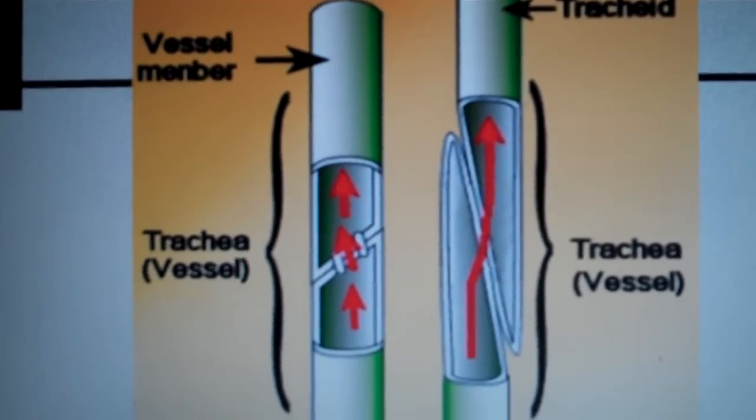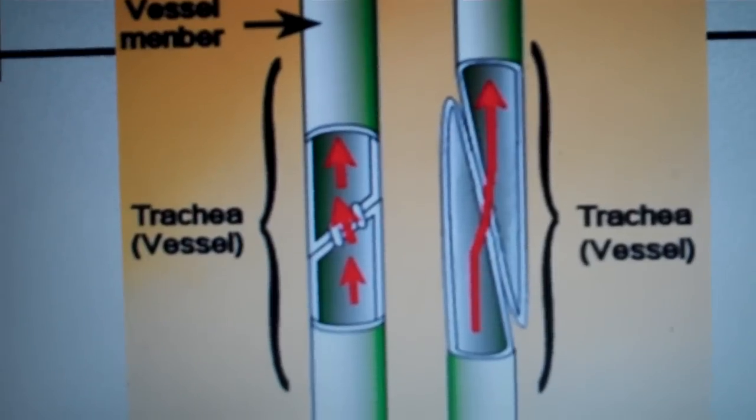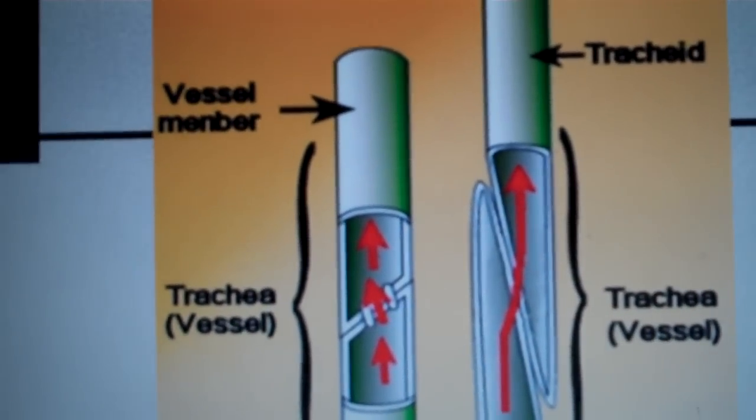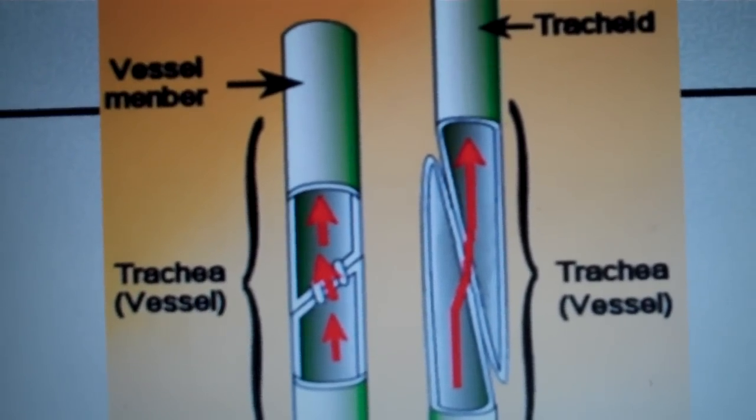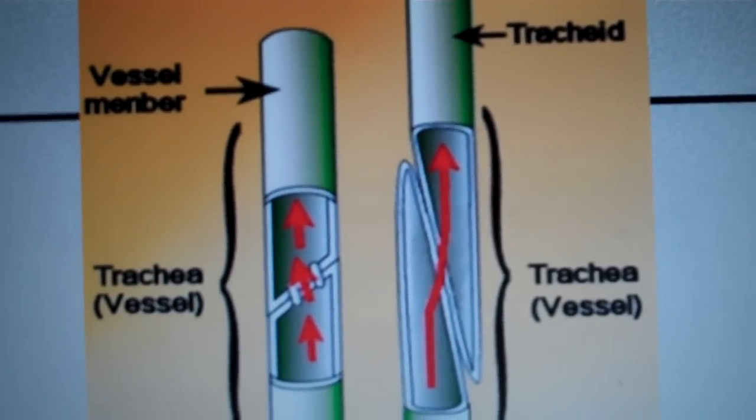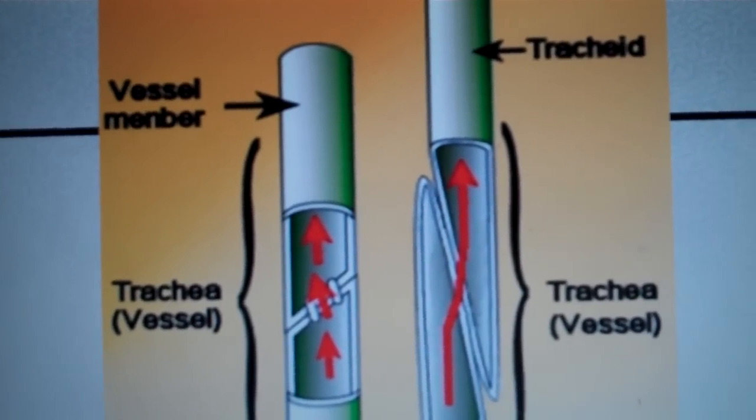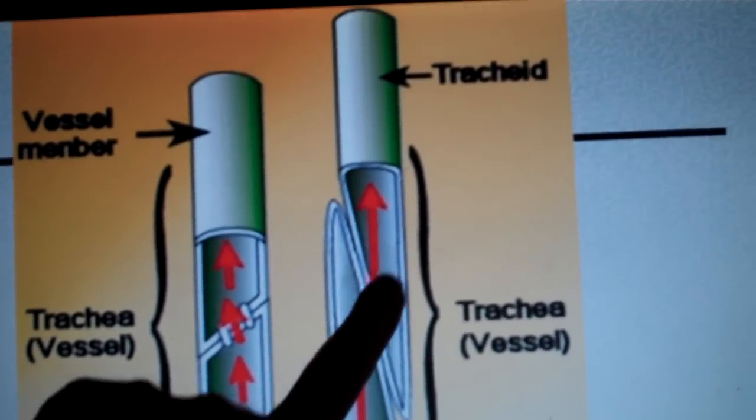The secondary walls of the tracheids have thinner regions called pits, where only primary walls are present, so there's no lignin there, and the water can move between the pits, which we can see here.